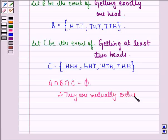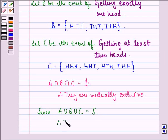Now, we have to show that they are mutually exhaustive. We see that since A union B union C is equal to the sample space. Therefore, they are mutually exhaustive.